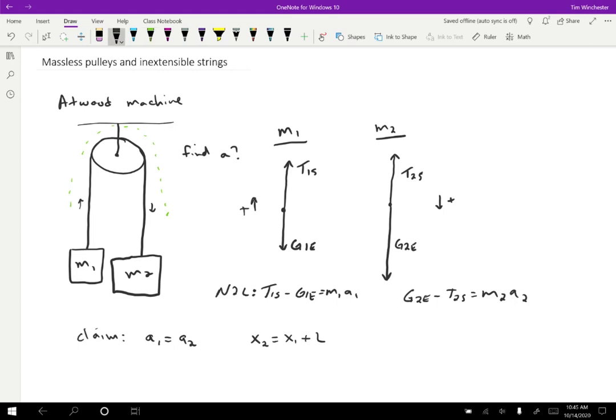If I take the derivative of this expression X2 equals X1 plus L, the derivative of X2 is V2, the derivative of X1 is V1, and the derivative of L is zero because L is constant. If the string is not changing in length, the two speeds have to match. If I take another derivative, I get A2 equals A1. This is a direct result of the fact that I'm assuming the string is inextensible, meaning the string is just a fixed length.